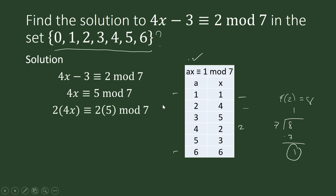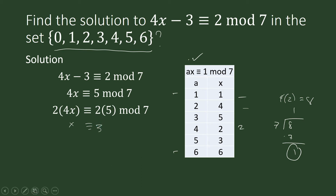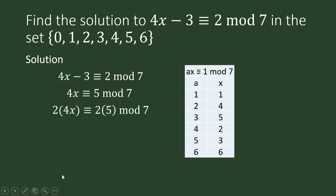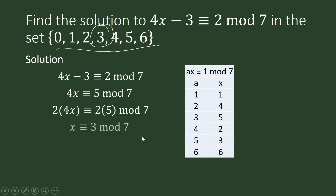So it becomes 2 times 4 times x is congruent to 2 times 5. Since 2 times 4 is congruent to 1, the left side becomes just x. And then the right side is congruent to 10. But 10 modulo 7 is congruent to 3, since 10 divided by 7 gives a remainder of 3. So which among these integers is congruent to 3 modulo 7? Obviously it's 3. So our solution is x equals 3.